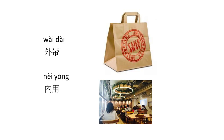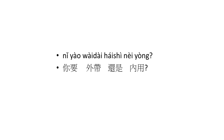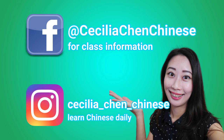外带 means takeaway — 外 means outside and 带 means bring, so to bring outside. 内用 means eat here. When you order food they might ask you: 你要外带还是内用？ — 还是 means 'or', so the phrase means 'Do you want to take away or eat here?' That's it! I hope this video helps. If you like it, please share it with friends and give it a thumbs up. See you next time, bye bye!